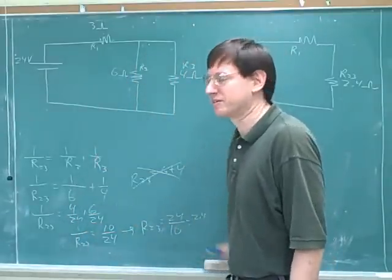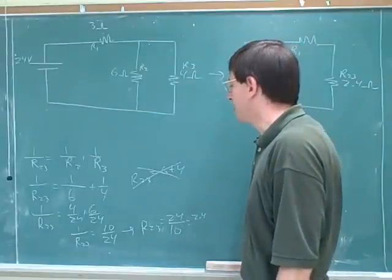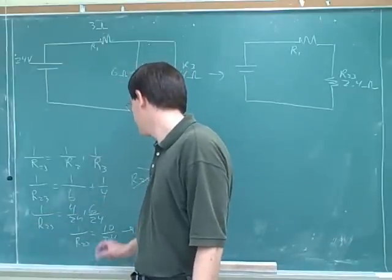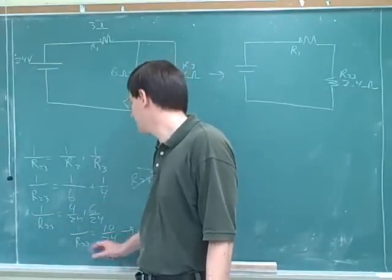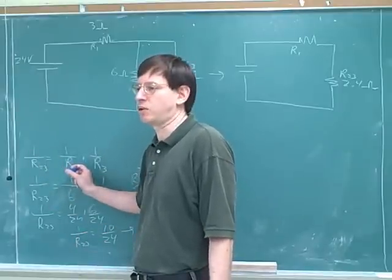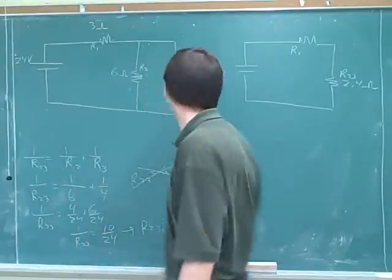Otherwise this would just be the sum formula. Another big mistake people make is they forget that this is 1 over R over here. A lot of people would just say, oh, the equivalent resistance is 10 24ths because they're lazy and they don't write down the left-hand side of the equation. So it's very important to write down both sides of the equation so we can see we have to take the reciprocal here.